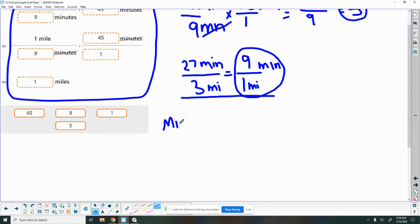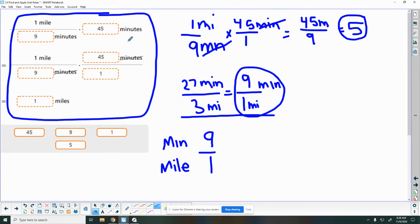So we're going to put our minutes on the top just like they are here, and we're going to put our miles on the bottom. So 9 minutes for 1 mile. And the question asked how many miles in 45 minutes. So we're going to say that equals, I'm going to put my minutes on top, 45.